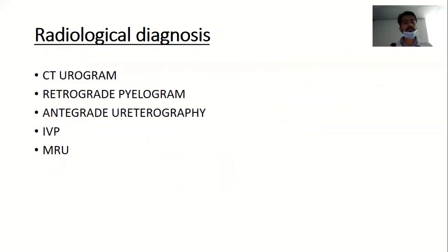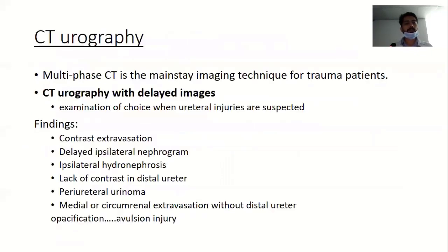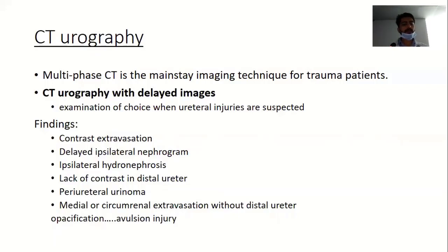Various radiological modalities are used in the diagnosis of ureteric injury, including CT urogram, retrograde pyelogram, antegrade ureterography, intravenous pyelography, and magnetic resonance urography. Multi-phase CT is the mainstay imaging for the trauma patient. Whenever ureteral injury is suspected, CT urography with delayed images is the investigation of choice. Findings that suggest ureteric injury include contrast extravasation, delayed ipsilateral nephrogram, ipsilateral hydronephrosis, lack of contrast in the distal ureter, periureteral urinoma, and medial or circumrenal extravasation without distal ureter opacification.